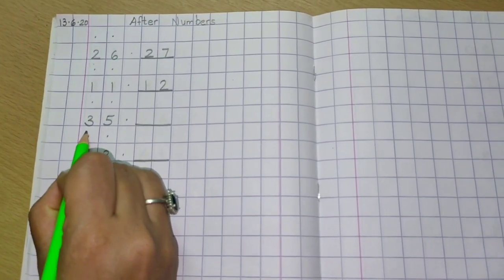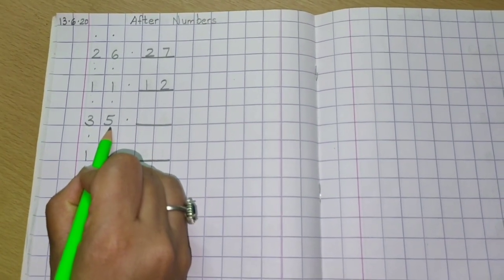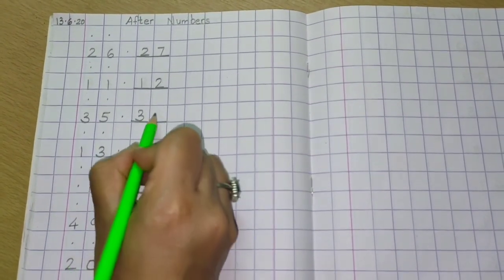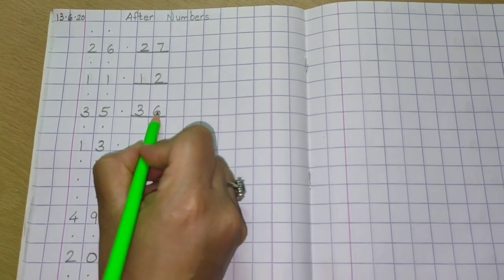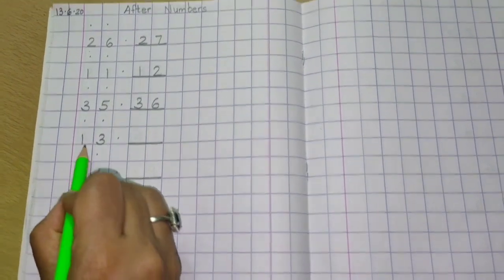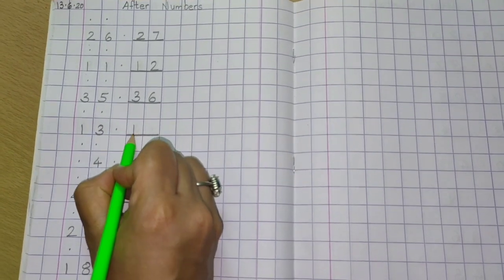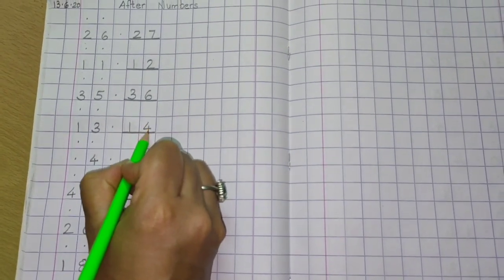Next number is 35. After 35 children, yes, 36. Then comes 13. After 13 we write 14.